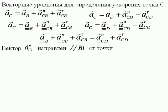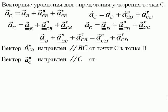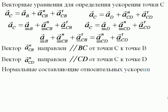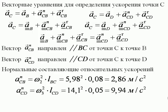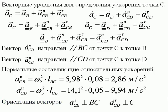Вектор a_BC^n параллелен шатуну BC и направлен от точки C к точке B. Вектор a_CD^n параллелен коромыслу CD и направлен от точки C к точке D. Модули нормальных составляющих относительных ускорений равны 2,86 и 9,94 м/с². Тангенциальные составляющие относительных ускорений перпендикулярны соответствующим звеньям. Найдём точку C на плане ускорений.